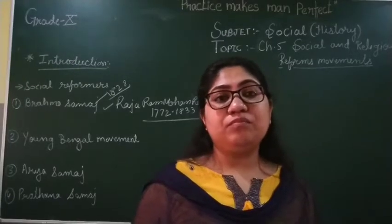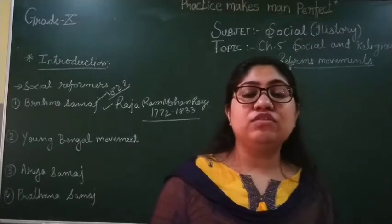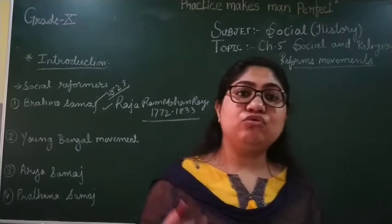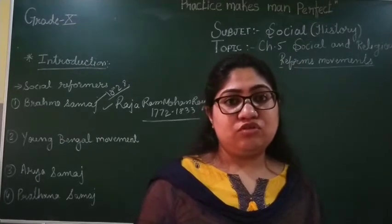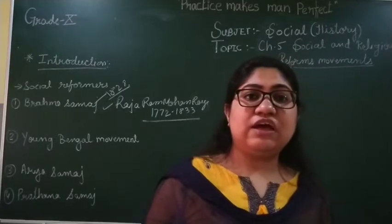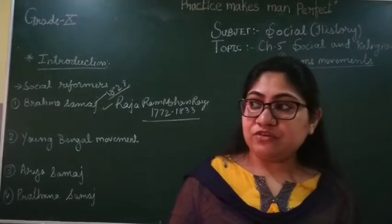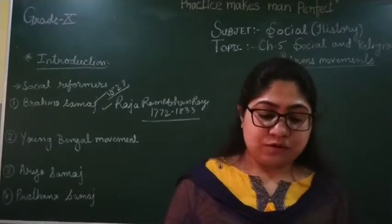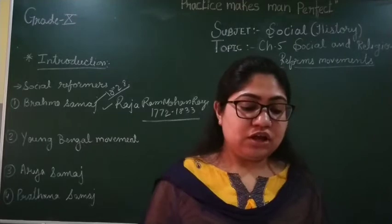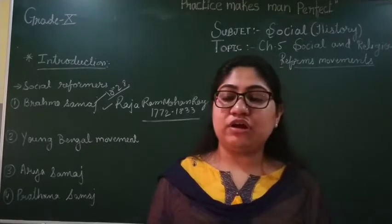The sati system means that in some communities, if a husband died, then with the husband's dead body, the wife was also burned. This type of social ritual had to be finished. The Brahma Samaj declared that one can take good things from anywhere.